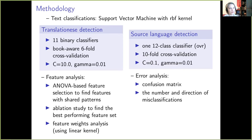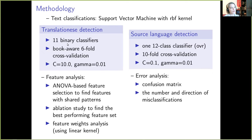Methodologically, this research is based on text classification experiments, feature analysis, and error analysis. All text classifications are based on a support vector machine algorithm. We run two classification experiments. In the first one, we solve a translationese detection task: for each of the 11 translational subcorpora, we train a binary classifier which predicts whether a text is a translation or a non-translation. The other experiment is built around a source language detection task, where we predict the source language of translations or whether a text is a non-translation originally written in Russian.